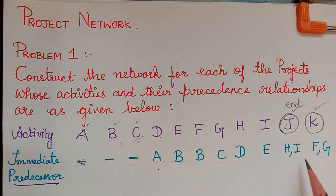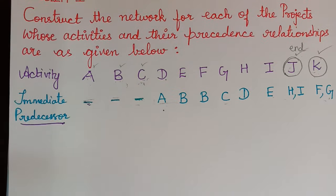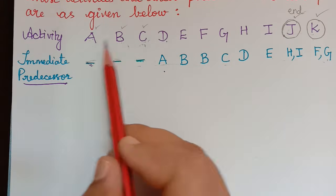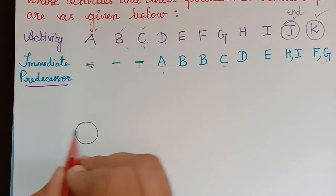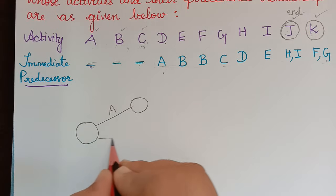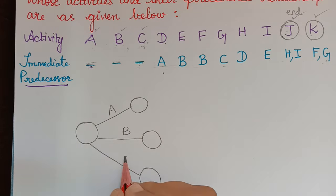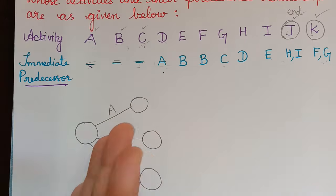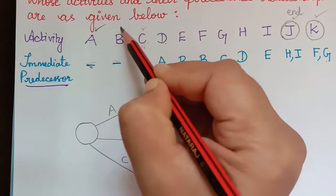After deciding the starting and ending activities, we must draw the network diagram — always draw a rough diagram first, then a fair diagram. We draw a single starting node from which activities A, B, and C emanate. All three activities do not have a predecessor, so there is no activity before this node.